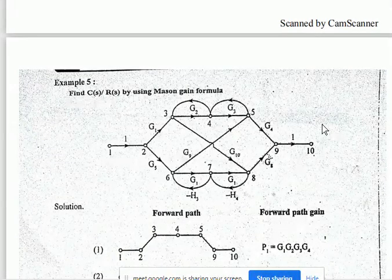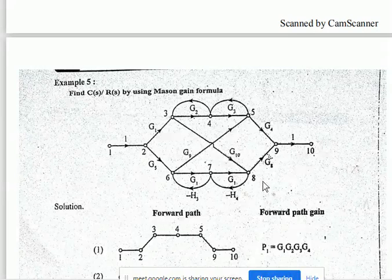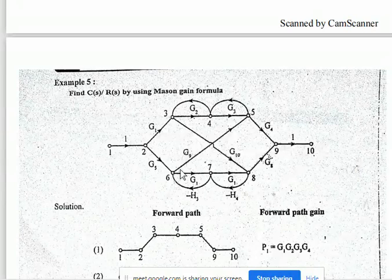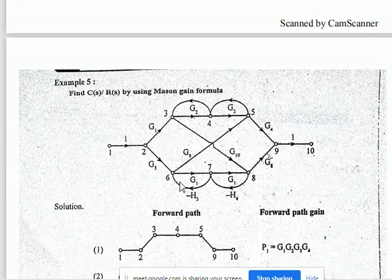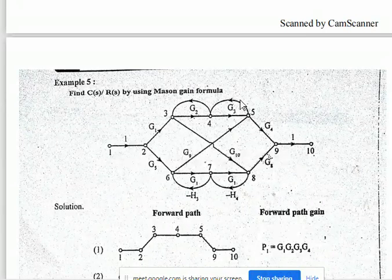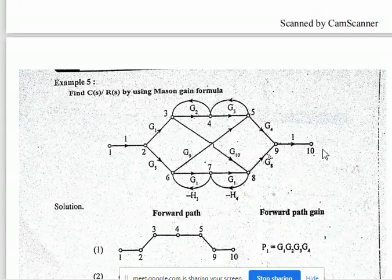Another forward path: 1 to 2, 2 to 3, 3 to 8, 8 to 7, 7 to 6, 6 to 5, 5 to 9, and 9 to 10. One more: 1 to 2, 2 to 3, 3 to 5, 5 to 4, 4 to 3, then 3 to 8, 8 to 9, and 9 to 10.